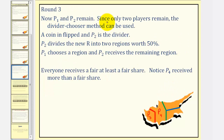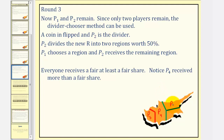For round three, since only two players remain — player one and player two — we use the divider-chooser method. A coin is flipped and let's say player two is the divider. Player two divides the region into two regions worth fifty percent of the remaining value, seen here divided by the blue segment. Player one chooses a region and player two receives the remaining region. Everyone receives at least a fair share, but notice how player four did receive more than a fair share.